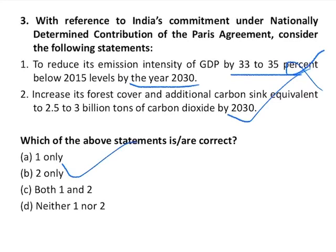Value addition on the Paris Climate Summit: India submitted its Nationally Determined Contribution under the Paris Agreement on a best effort basis, keeping in mind development imperatives. India promised to reduce its emission intensity of GDP by 33 to 35 percent below 2005 level by 2030, achieve 40 percent of cumulative electric power installed capacity from non-fossil fuel sources by 2030, and increase forest cover to create an additional carbon sink equivalent to 2.5 to 3 billion tons of CO2 by 2030.